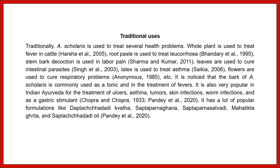Traditionally, Alstonia scholaris is used to treat several health problems. The whole plant is used to treat fever in cattle. Root paste is used to treat leucorrhoea. Stem bark decoction is used in labor pain. Leaves are used to cure intestinal parasites. Latex is used to treat asthma, and flowers are used to cure respiratory problems.